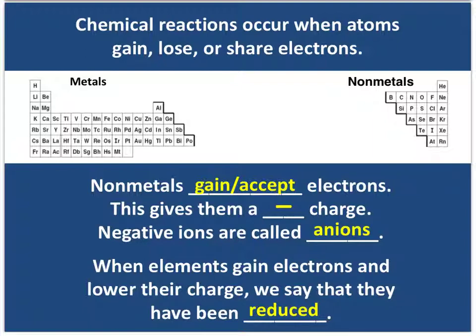Non-metals will gain or accept electrons. When they do that, they have more electrons — more negative charge — than protons, which are positively charged. And these are called anions. When an element gains an electron, it's going to lower their charge — it's going to become more negative. So we say that that substance has been reduced.